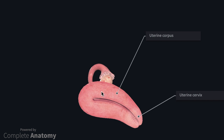The structure of the cervix is slightly more complicated and is not typically described in anatomical texts. It is primarily a fibrous structure that acts as a sphincter during pregnancy.